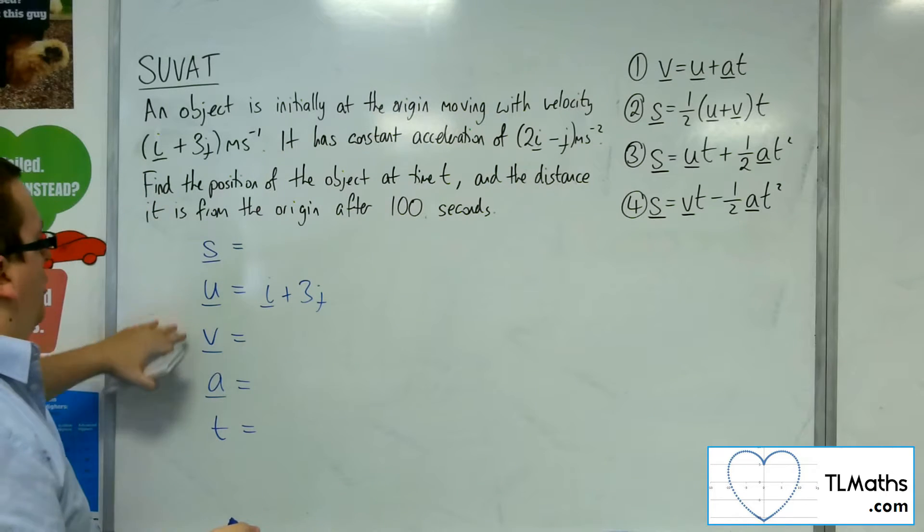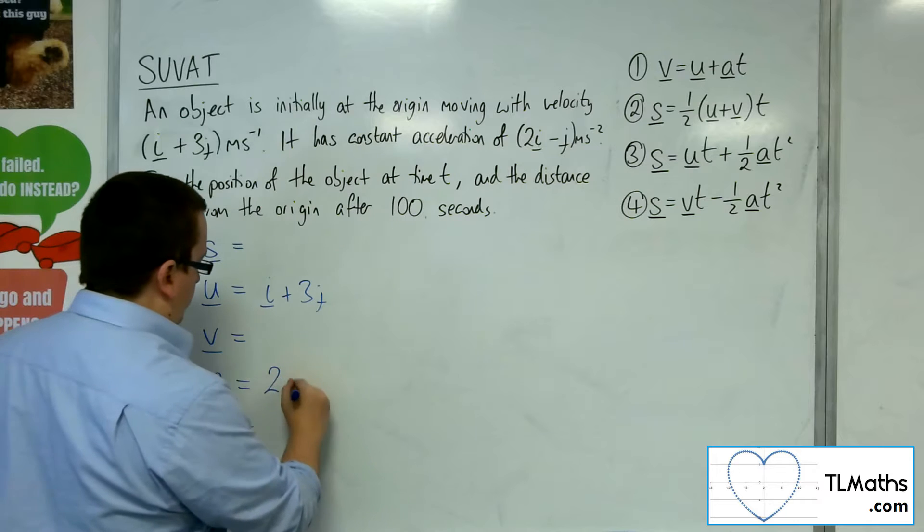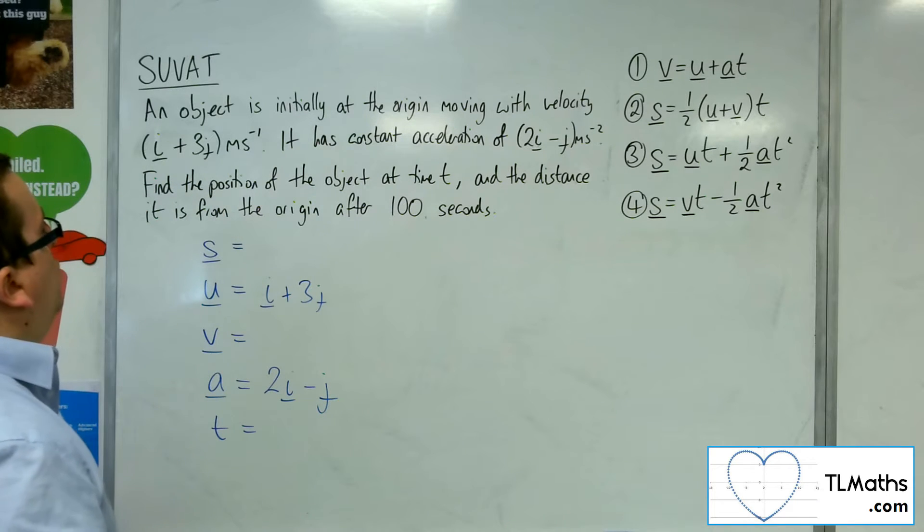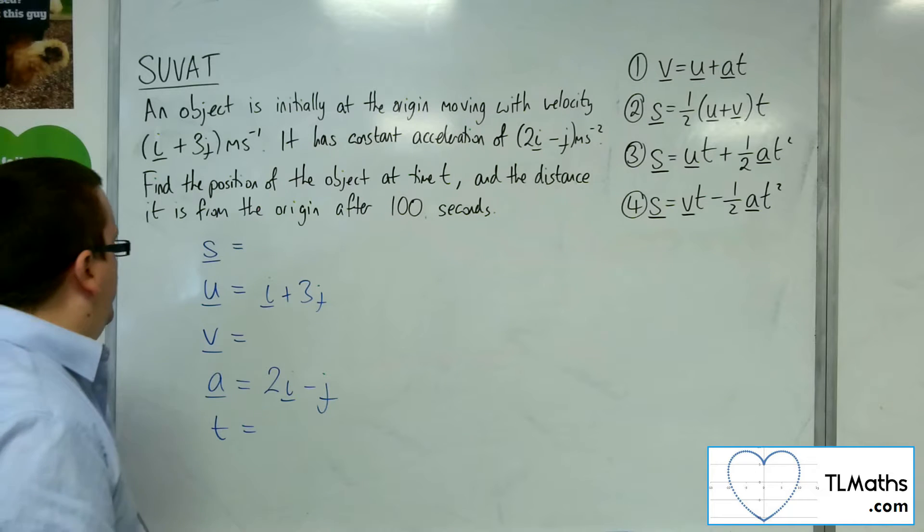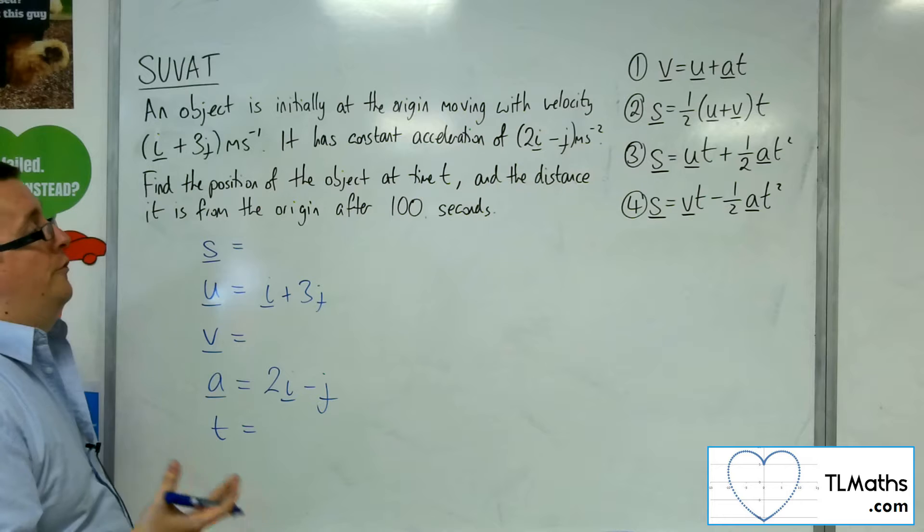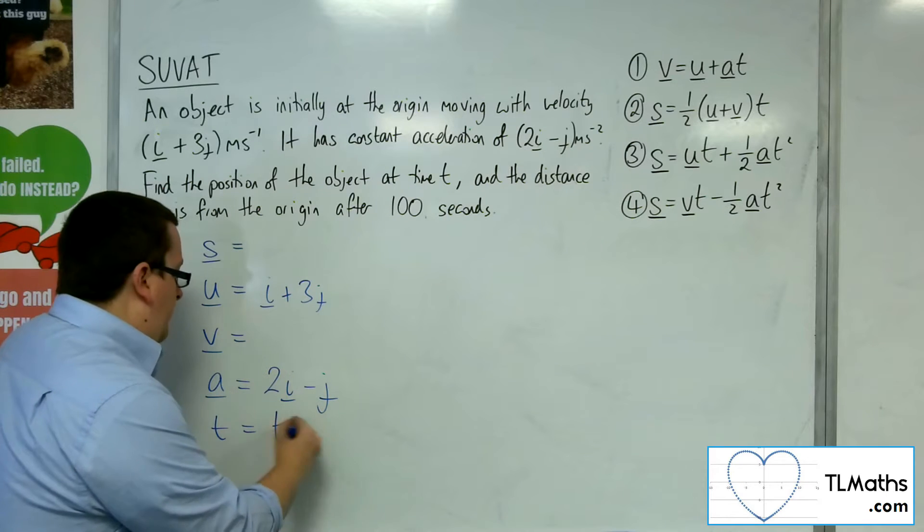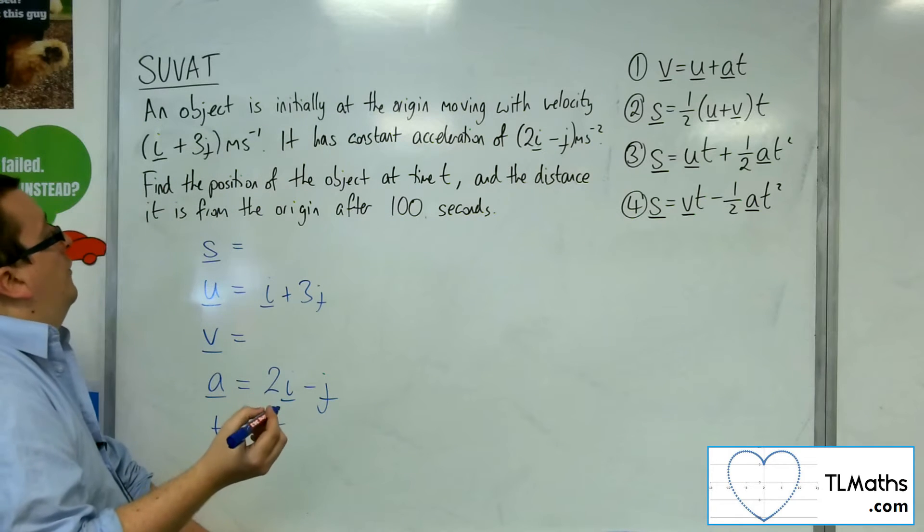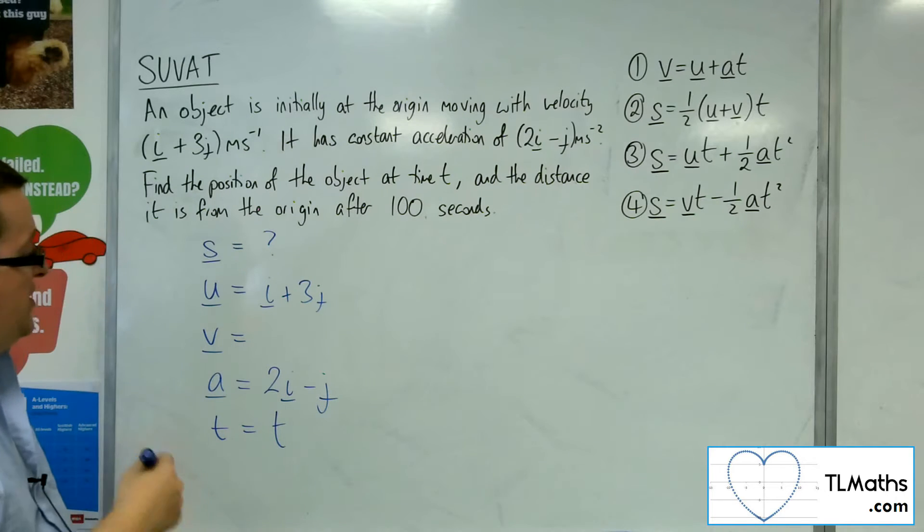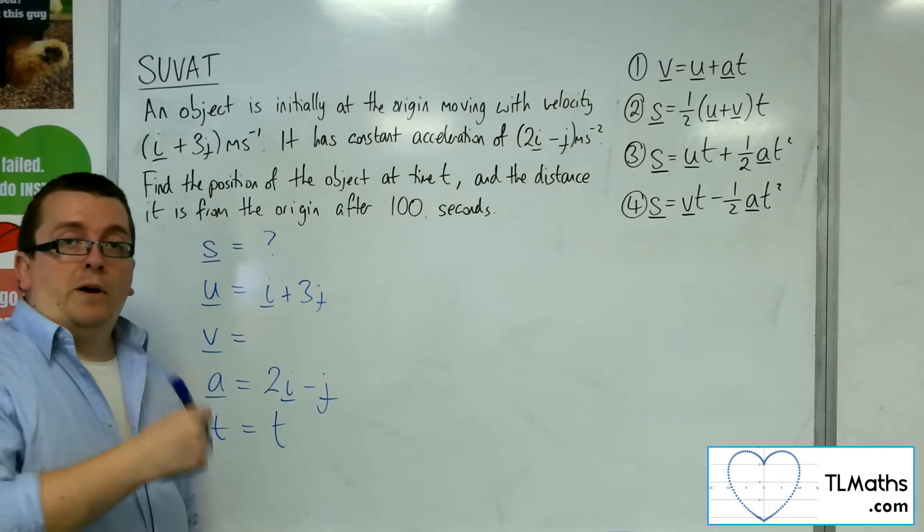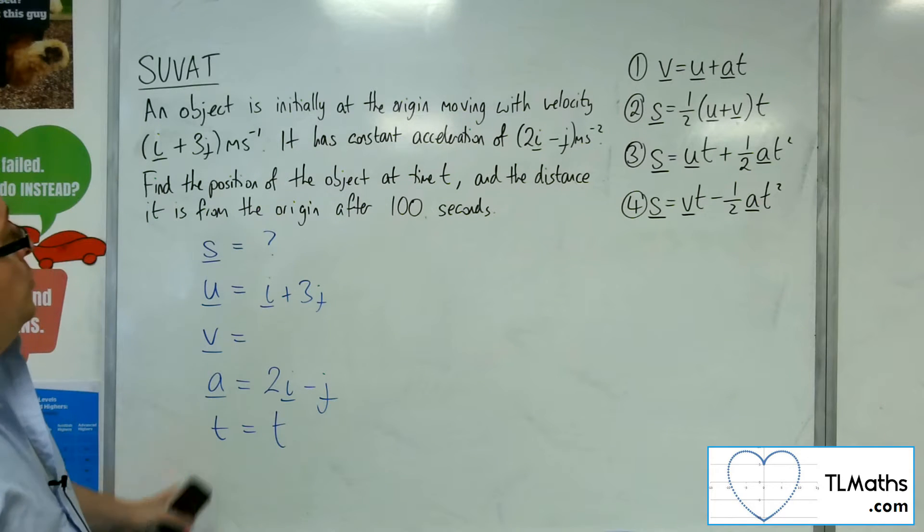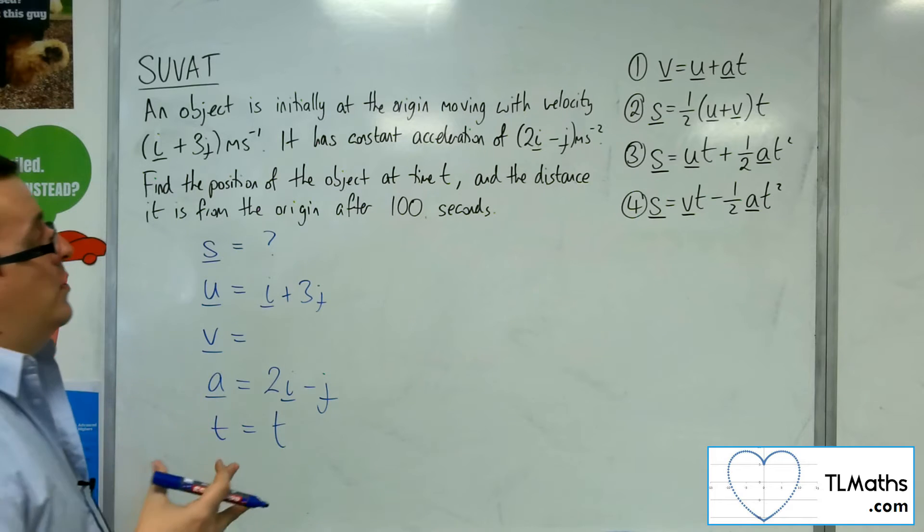It has constant acceleration of 2i minus j. And we want to find the position of the object at time t. So in actual fact, we are saying that time is t, and we want to find the position in terms of t. So t is still going to be as part of the displacement equation. So I want the equation that doesn't have v in it, which is number 3.